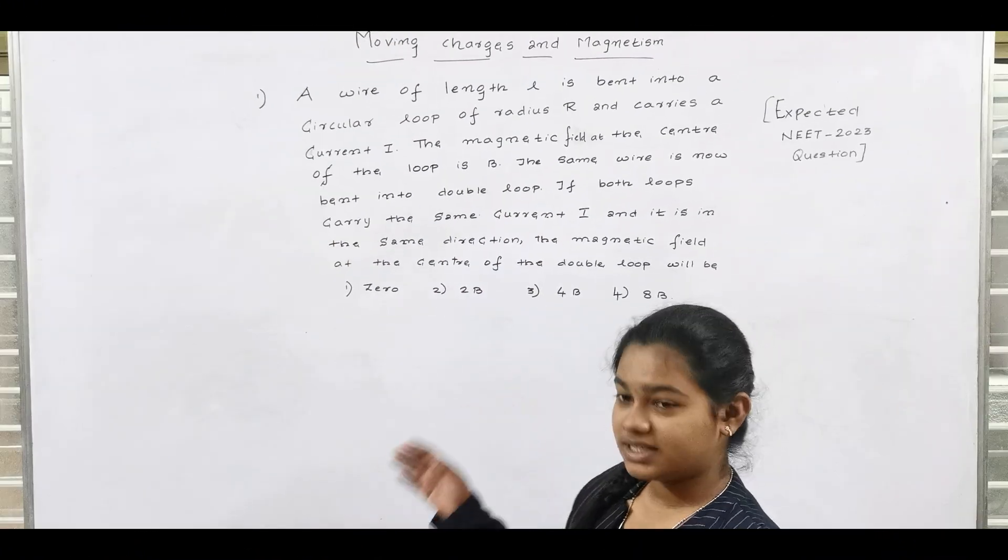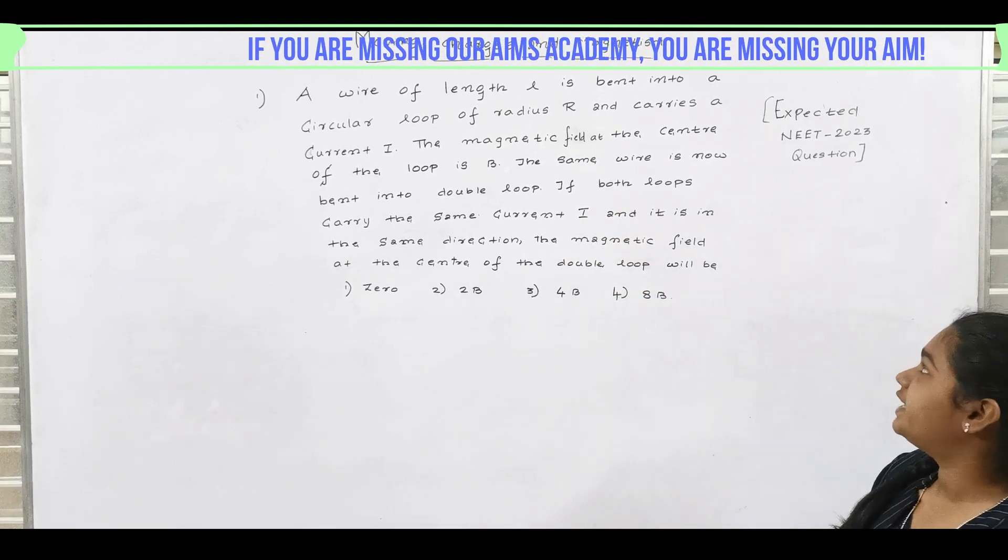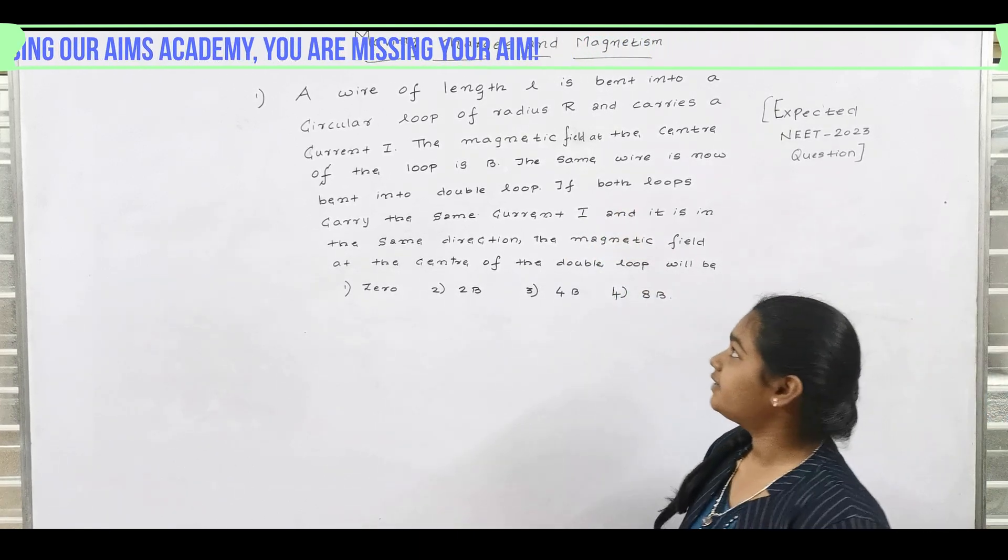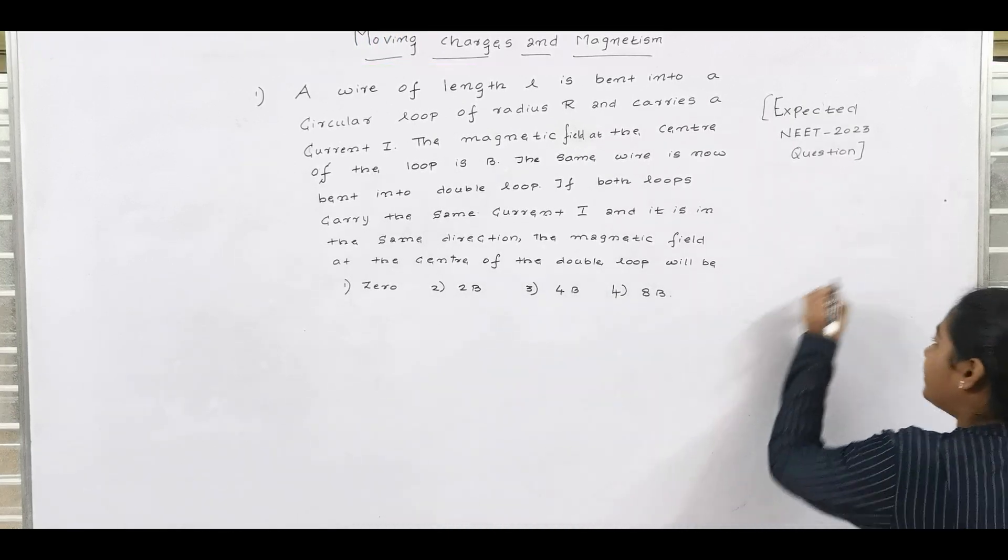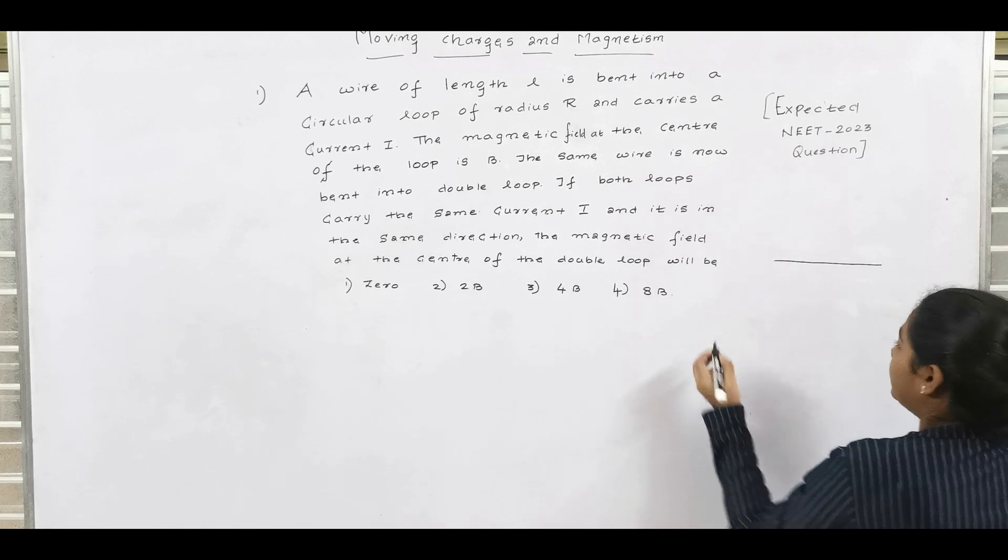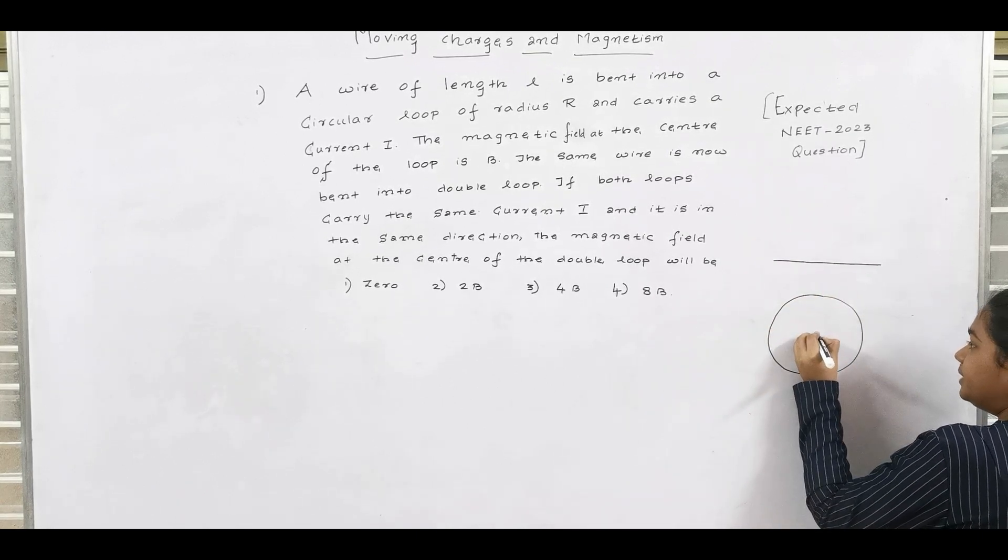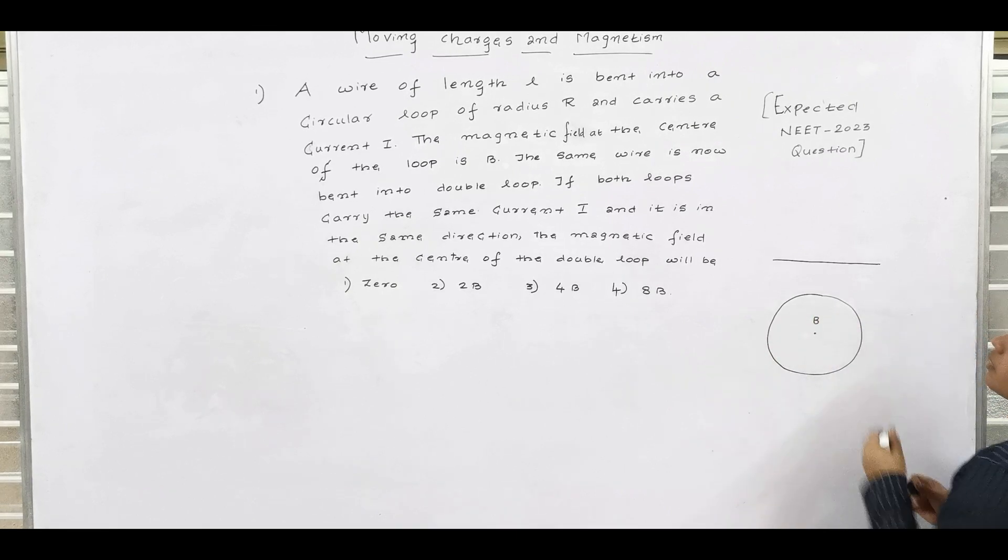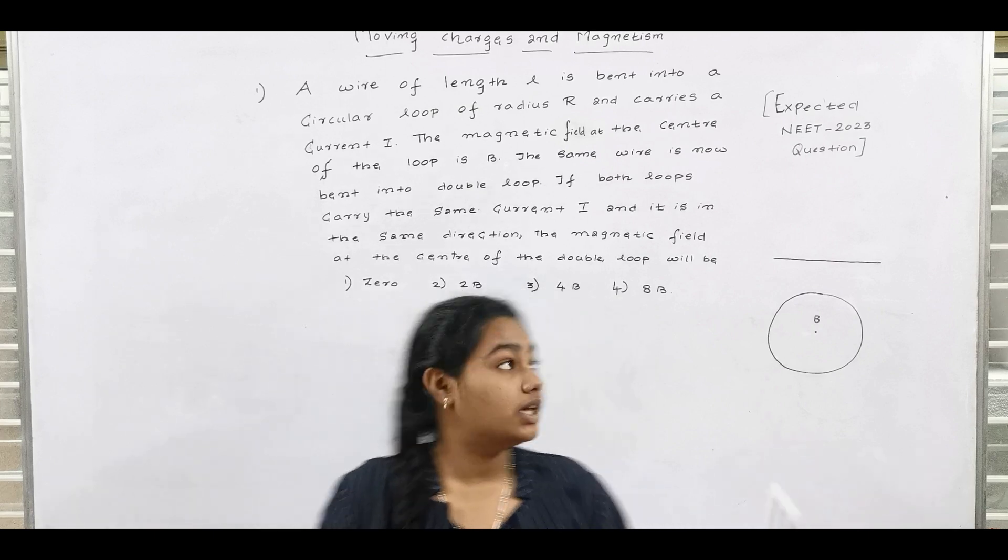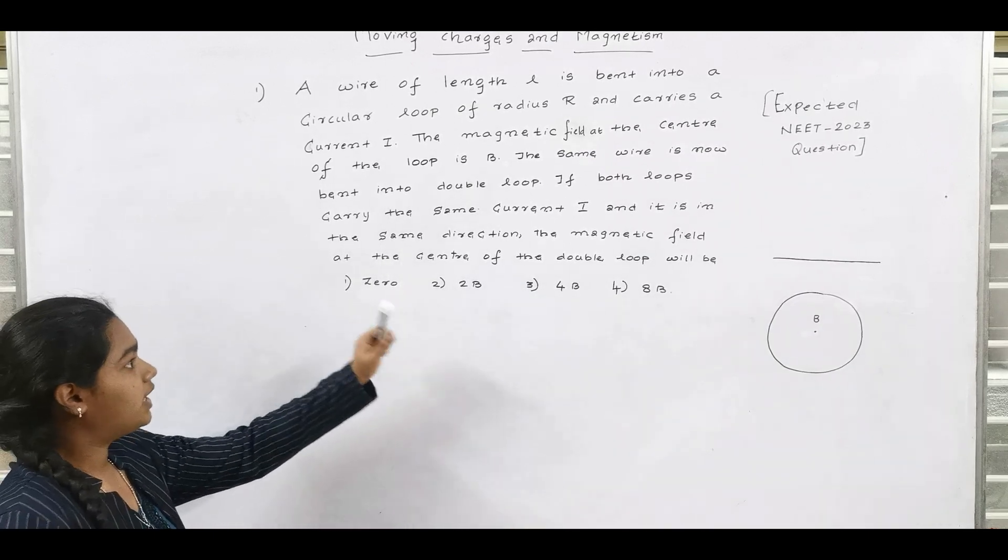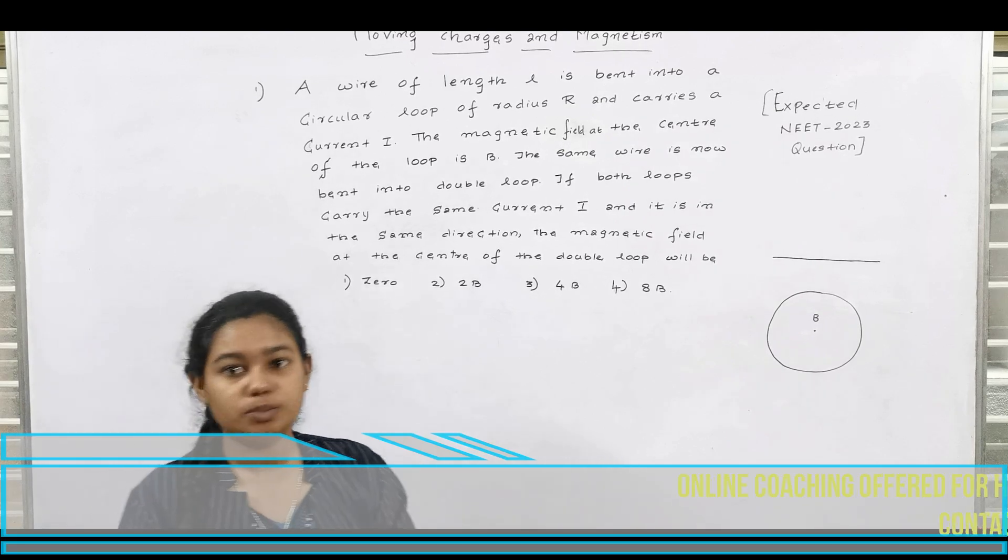So the given question here is, a wire of length L is bent into a circular loop of radius R and carries a magnetic field at the centre, this B. So now let us take a wire of length L and it is made into a circular loop with a magnetic field at the centre, B. Now the same wire is now bent into a double loop. It's a current in both the same, I, and it is in the same direction.